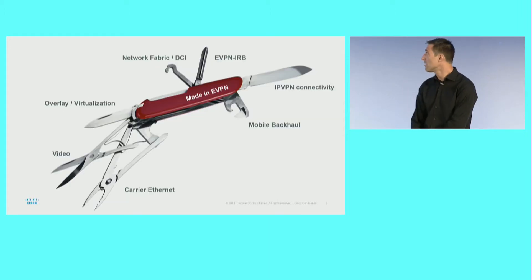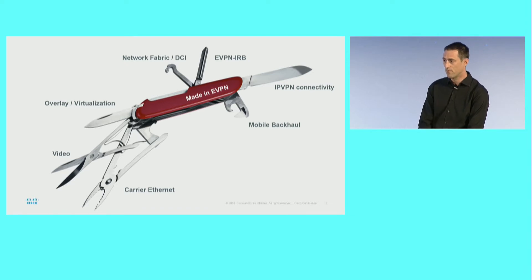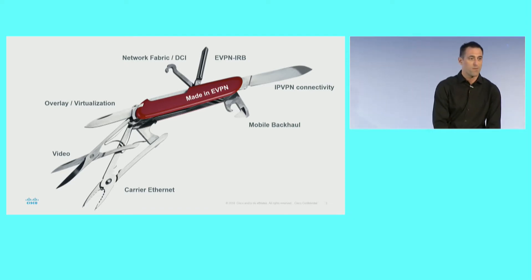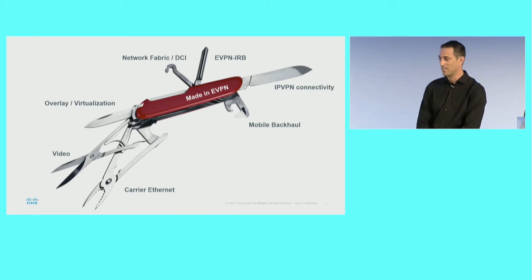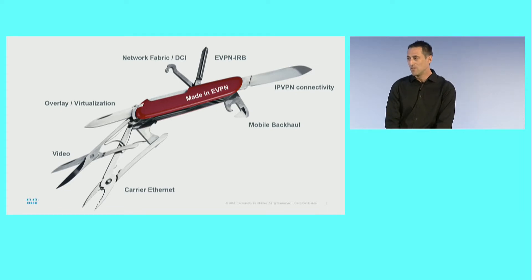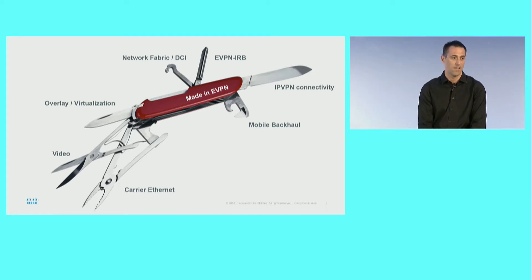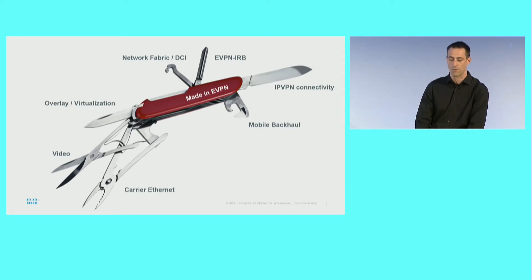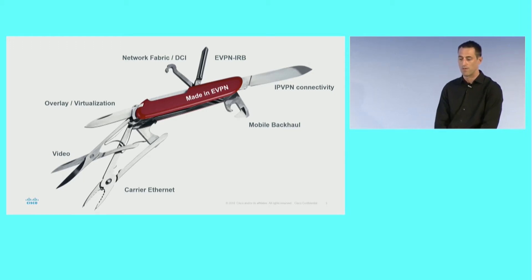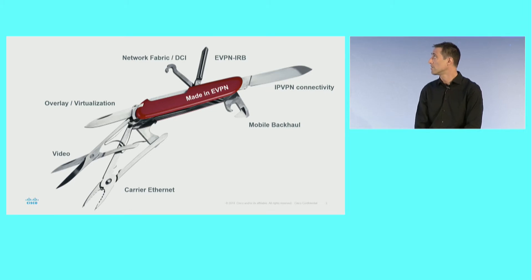For me, eVPN is like that tool — it can do pretty much everything. It can save your life. When you're stuck in the woods, you want that also. Basically, eVPN can do L3 applications, L2 applications. It can do gateways, IRB. It works for data center, network fabric, DCI. It's your common overlay, very good for virtualization. It works for video. So it works for pretty much everything — use your eVPN knife and you will survive.